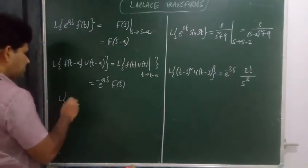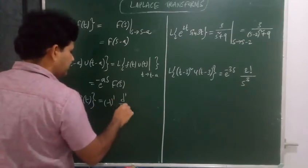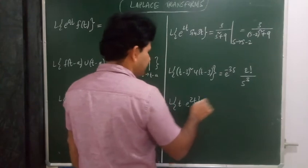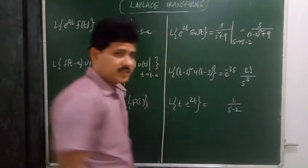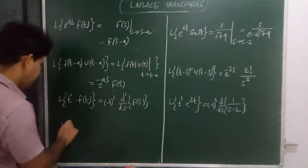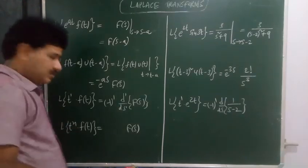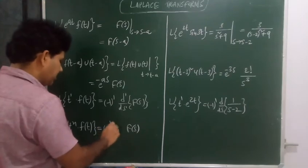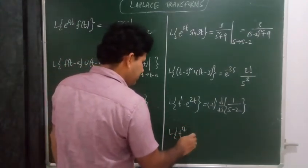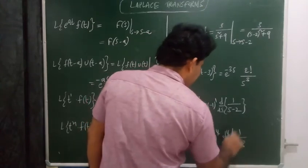Laplace transform of a function multiplied by t to the power 1: the result is (−1)^1 times the first derivative of F(s). For example, L{t · e^(2t)}: L{e^(2t)} is 1 over (s−2), multiplied by t gives (−1)^1 times d/ds of [1/(s−2)]. In general, L{t^n · f(t)} equals (−1)^n times the nth derivative of F(s). For example, L{t^4 · e^(3t)}: you have (−1)^4 times the fourth derivative of 1/(s−3).